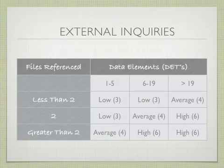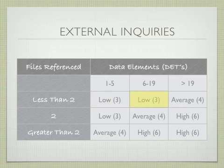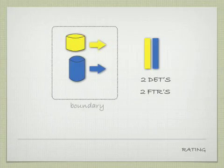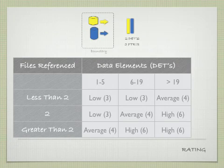The table for external inquiries uses the same values as for external inputs. Between one and five data elements is rated low. Between six and nineteen data elements with less than two FTRs is also rated low. Average falls across the diagonal, and high is in the right-hand quadrant. In this example, with two data elements — between one and five — and two FTRs, it would be rated low and valued at three function points.